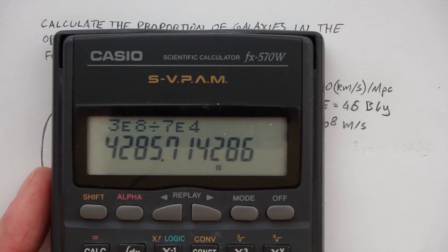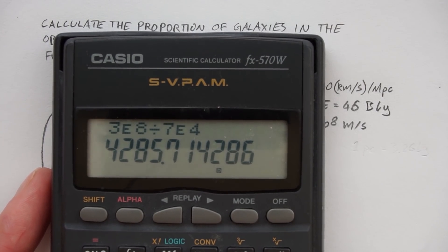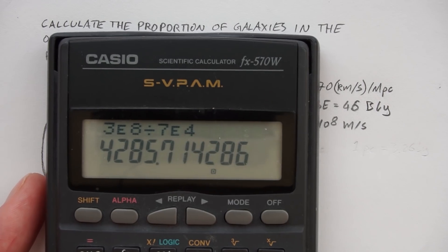So on my trusty Casio, that turns out to be around 4,000 megaparsecs.